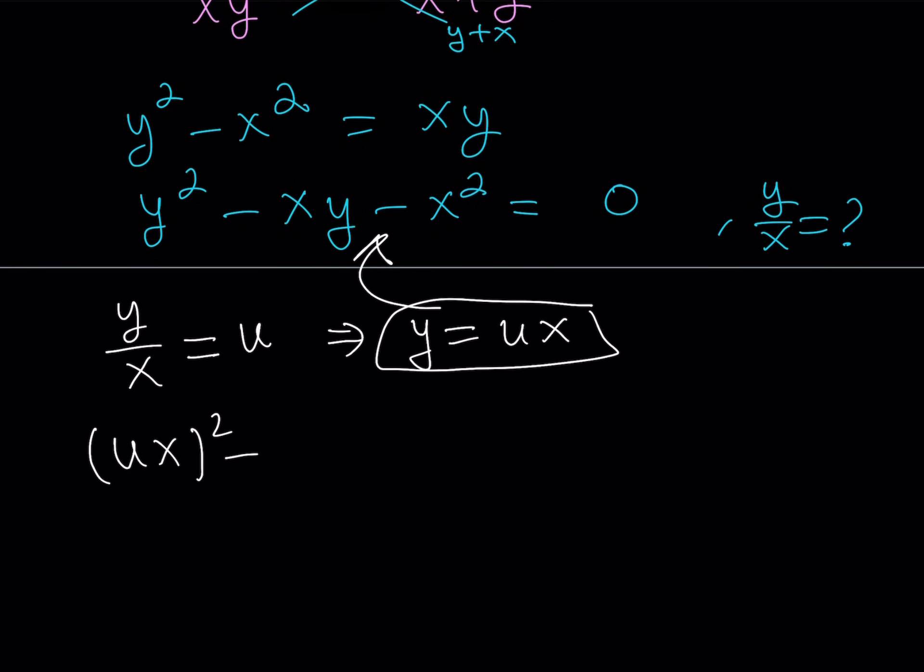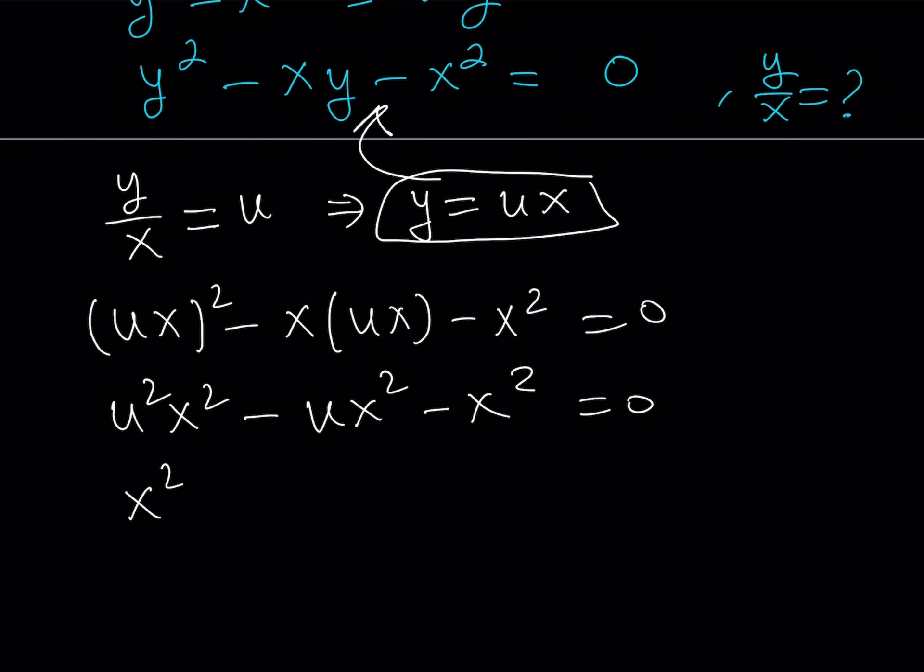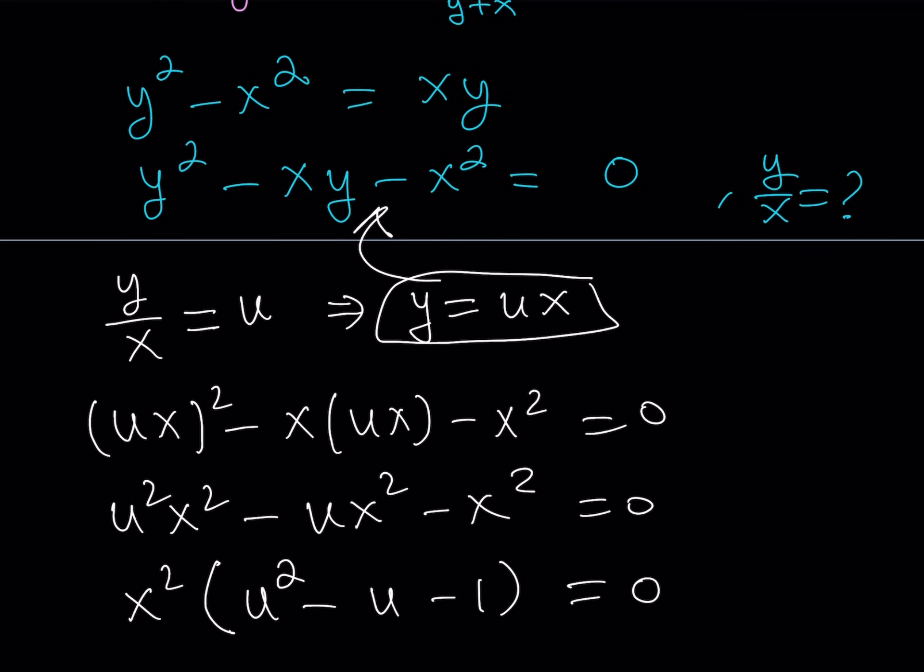Great. So I'm going to go ahead and substitute this into my equation. And always remember that my goal is to solve for u. Okay, great. So if you replace y with ux, ux squared minus x times ux minus x squared equals 0. And here, we get u squared x squared minus ux squared minus x squared equals 0.